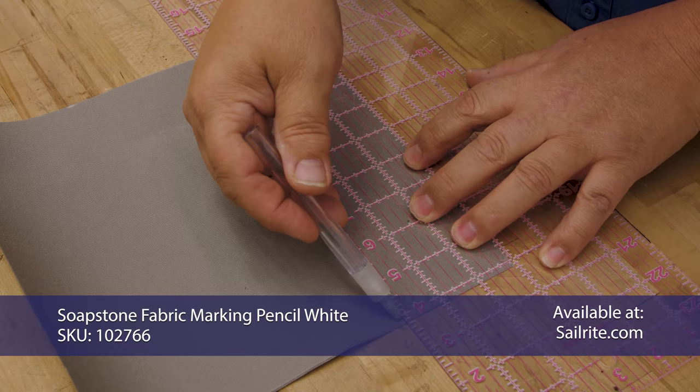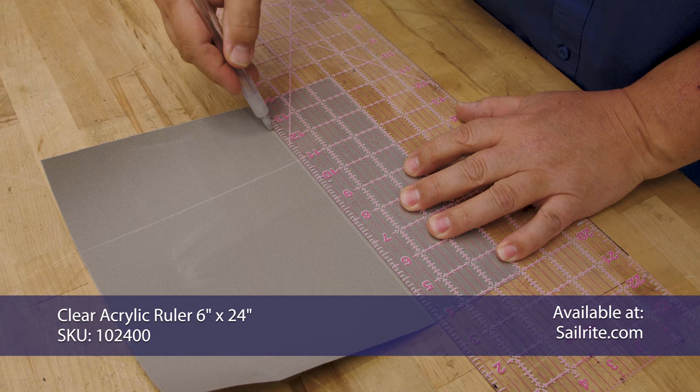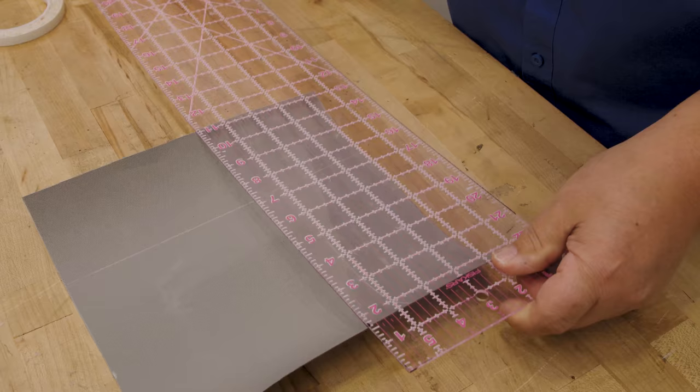I'm going to measure up three inches and mark the fabric, and then do the same thing over here because I'm going to make a one and a half inch hem. You can make whatever hem you'd like, but that's what I'm doing here. So three inches up from the edge. The next hem will be one and a half, so we'll put the clear acrylic ruler here and I'll just mark that as well.